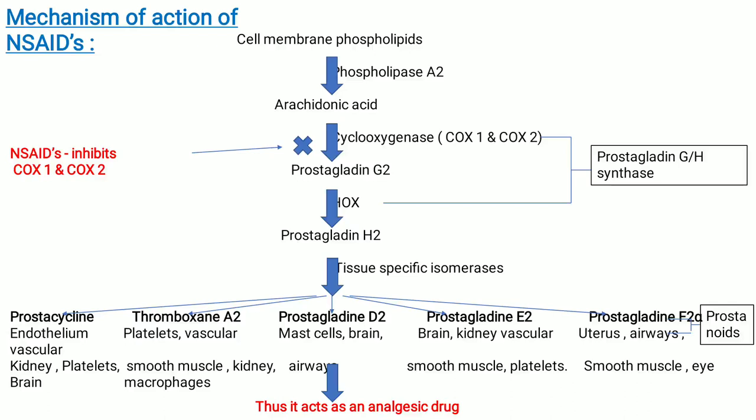Non-steroidal anti-inflammatory drugs inhibit cyclooxygenase — COX-1 and COX-2. Thus, the conversion of arachidonic acid to prostaglandin G2 does not take place. Further reaction does not occur and pain sensation is not detected by our brain. Thus, it acts as an analgesic drug.